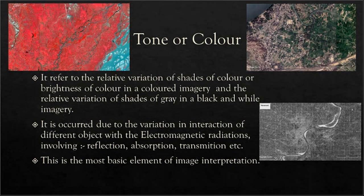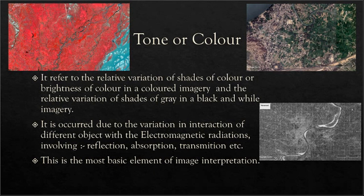This variation in the shades of color is used for understanding and getting information of the terrain. It basically occurs due to the variation of interaction of different objects with the electromagnetic radiation of objects available on the ground surface. These are also known as the basic elements of image interpretation.